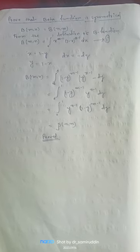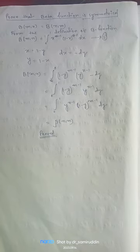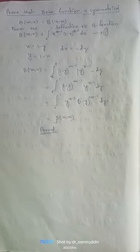Putting the value in equation number 1, we have beta mn is equal to integration from 1 to 0, 1 minus y to the power m minus 1, y to the power n minus 1, minus dy.